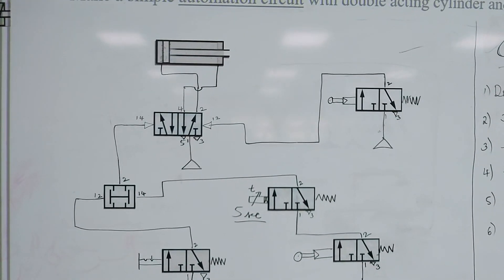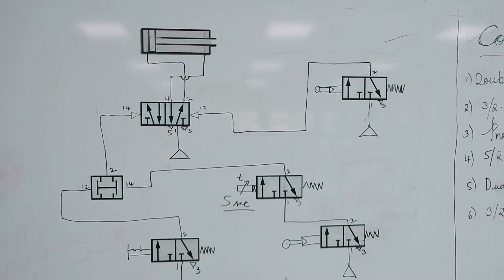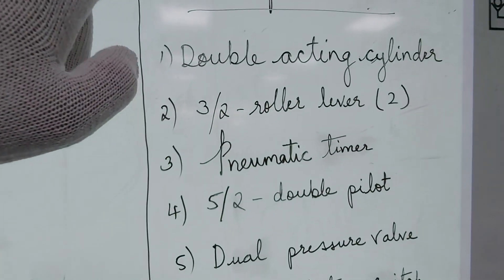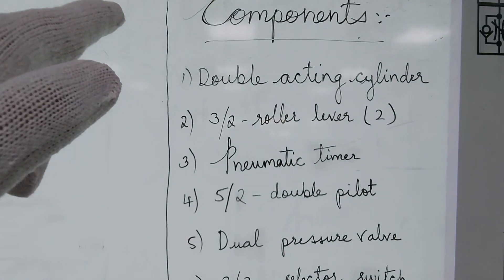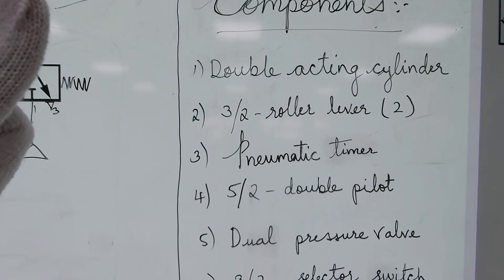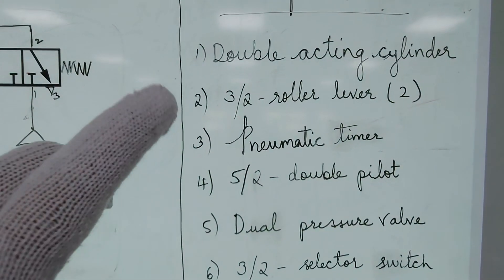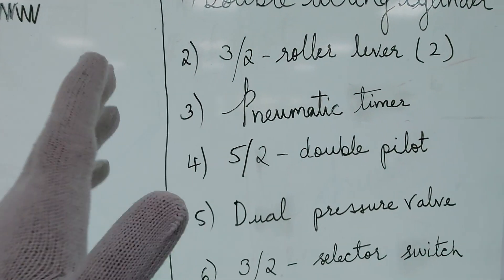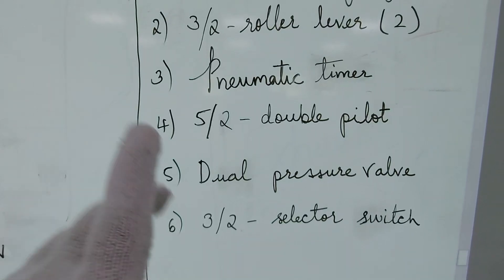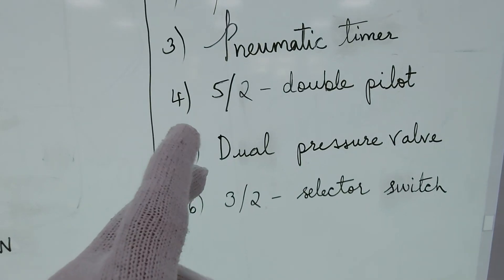In this exercise, we'll make an automation circuit with a double acting cylinder and timer. The components we are going to need are: one double acting cylinder, two 3x2 roller switches, a pneumatic timer, a 5x2 wave valve with double pilot, and a dual pressure valve — also called an R valve or dual pressure valve.